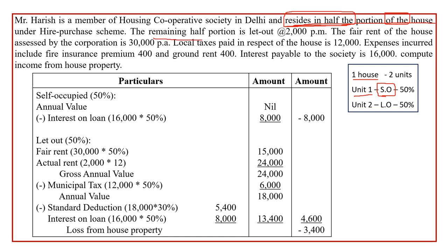The one house is divided into two equal units. The remaining half portion is let out, so Unit 2 is a let out property. The floor area proportion is 50% for each unit. After deciding the proportion, I start the answer with Unit 1. You have to understand this division clearly — if you do, house property chapter is simple with only three deductions.